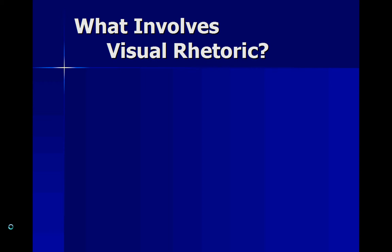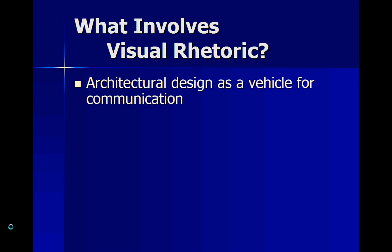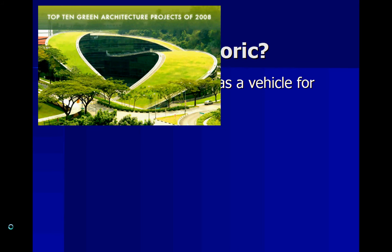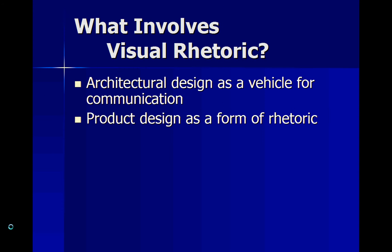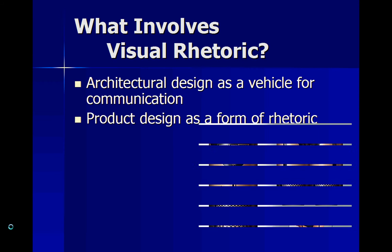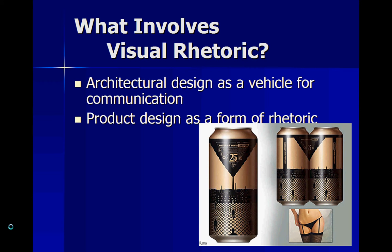So let's start with what involves Visual Rhetoric. Architectural design has been suggested as a vehicle for communication, and here we have an example of architectural design that communicates moving towards a greener world. Product design has also been suggested as a form of rhetoric, and I'll let you look at this can design for a few seconds and come to your own conclusions.